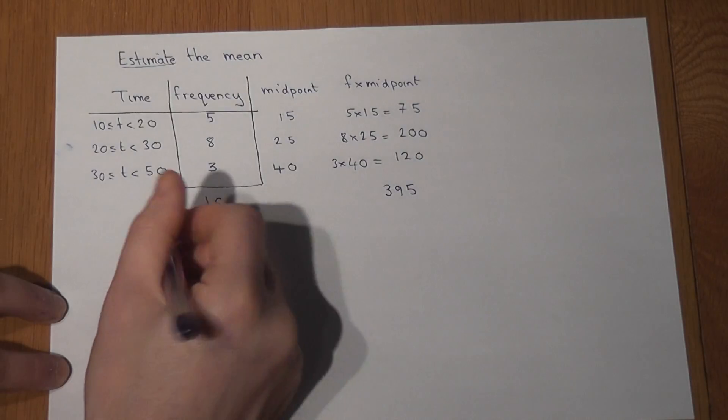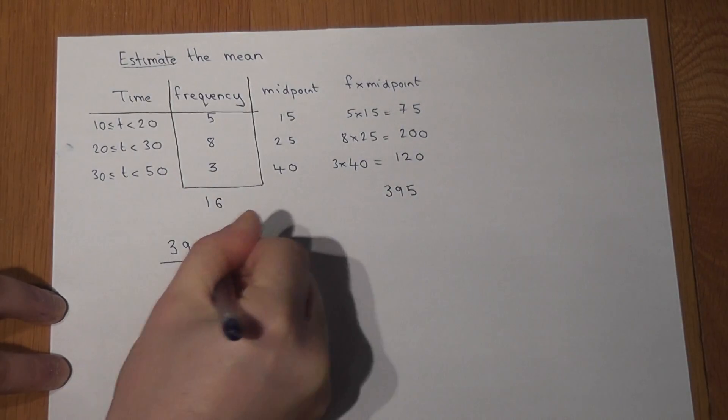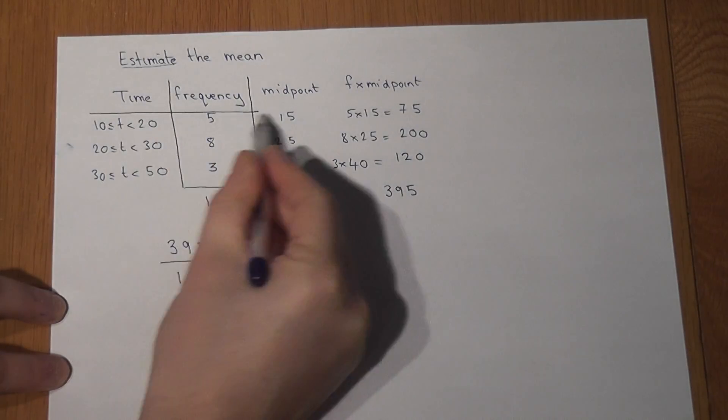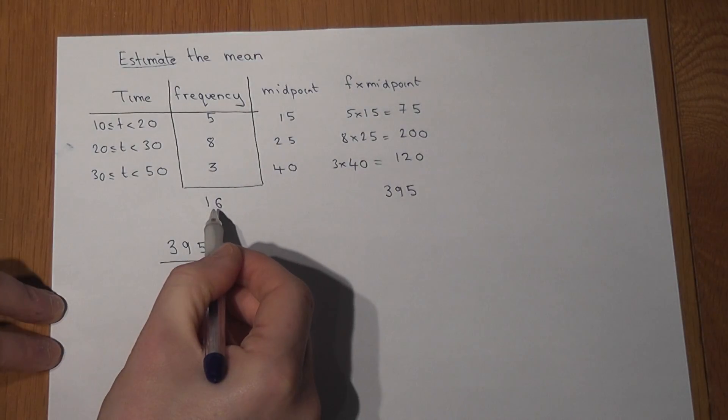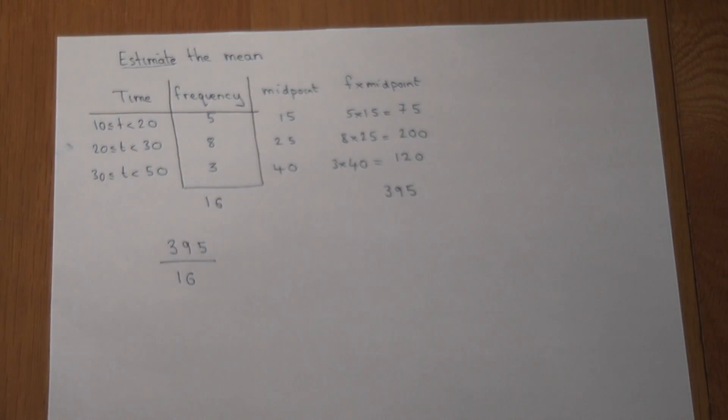The common error is to divide by three because there are three rows. However, there are 16 people, so 395 divided by 16 works out to be 24.7.